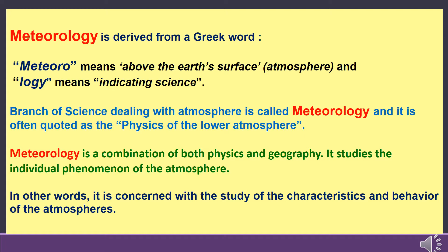Here we will discuss about meteorology. Meteorology is derived from a Greek word — 'meteor' means above the earth surface, meaning atmosphere, and 'logi' means indicating signs. The branch of science dealing with the atmosphere is called meteorology and it is often quoted as the physics of the lower atmosphere. Meteorology is a combination of both physics and geography, and its study covers individual phenomena of the atmosphere — in other words, it is concerned with the study of characteristics and behavior of the atmosphere.